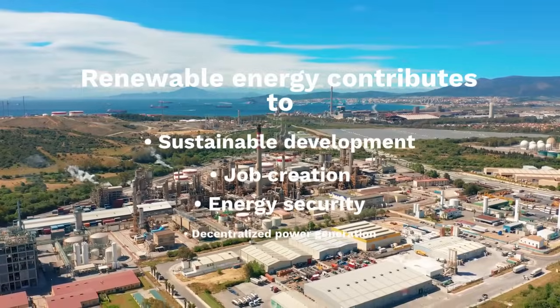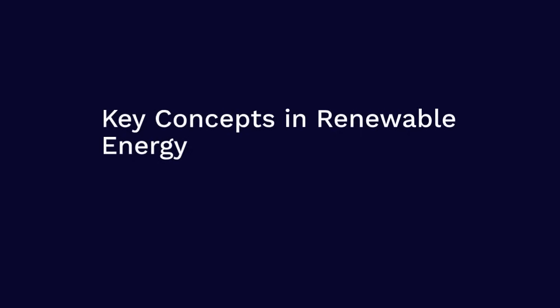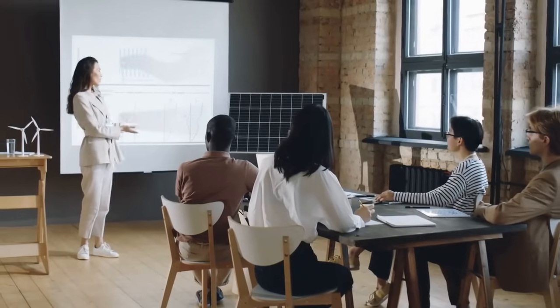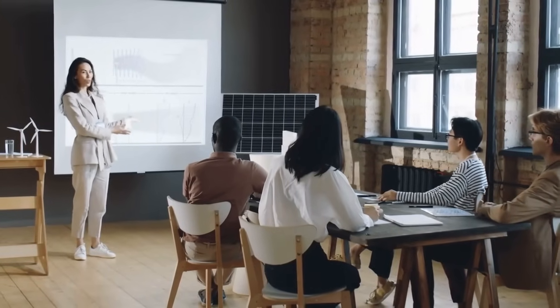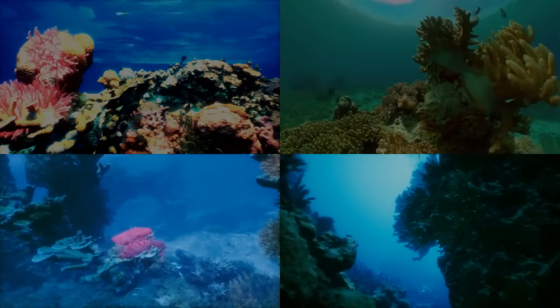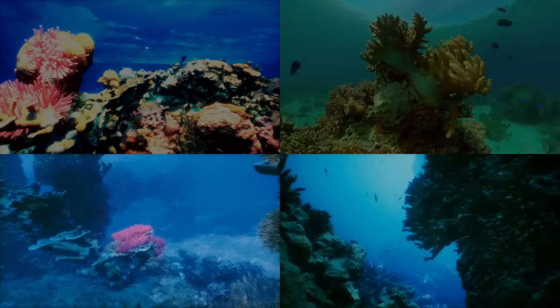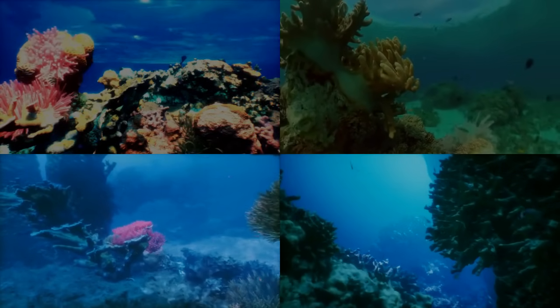Key Concepts in Renewable Energy. 1. Energy Conversion: Renewable energy sources function by converting one form of energy into another suitable form for consumption. For example, photovoltaic cells convert solar energy into electricity, while wind turbines convert wind energy into mechanical energy, which is further converted into electrical energy.